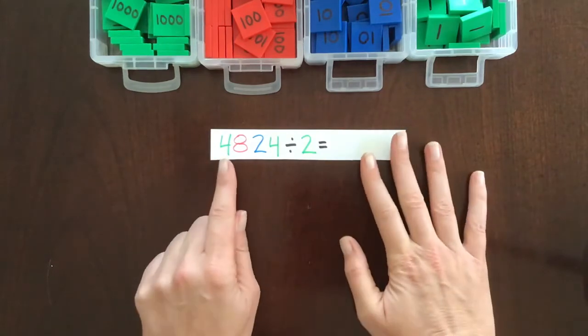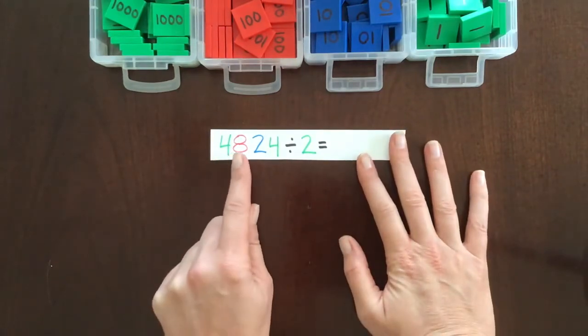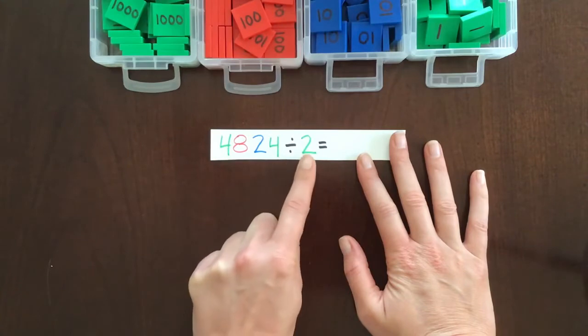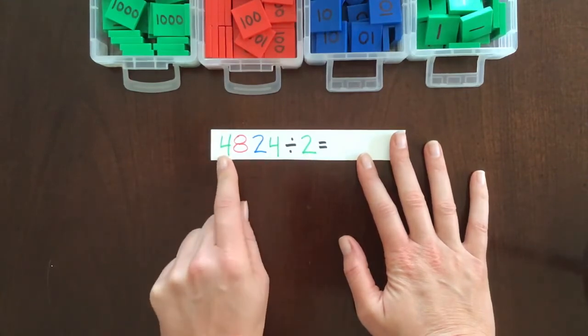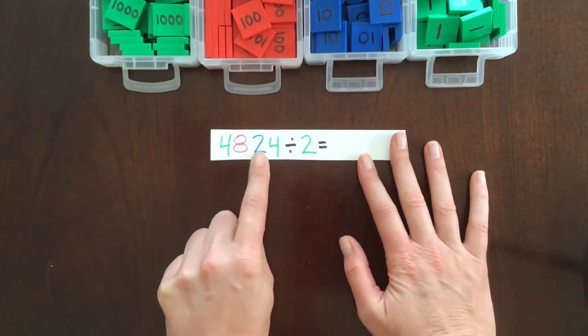So we have 4824 divided by 2, and the first thing we're going to do is build the dividend. That's this number.